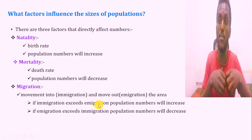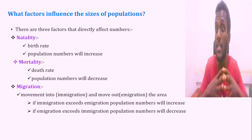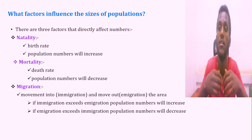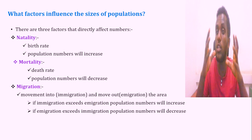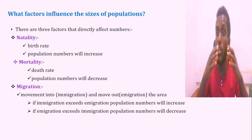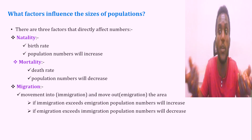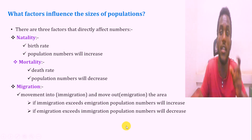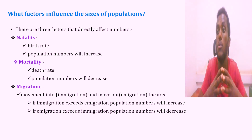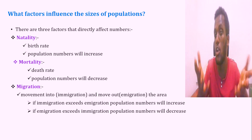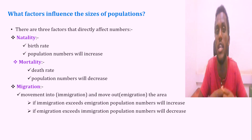If immigration and emigration are about equal, and births and deaths balance each other, then the population has no net growth. In that case, the population is almost stable.